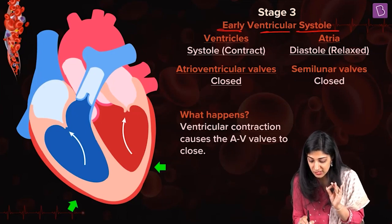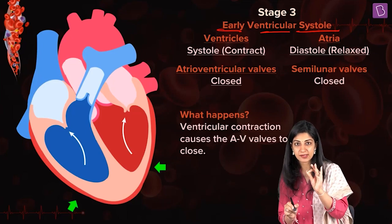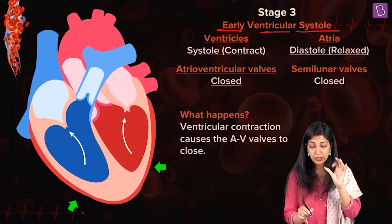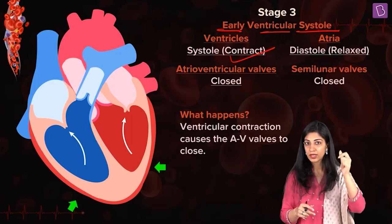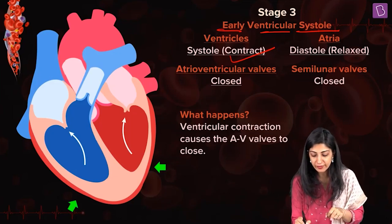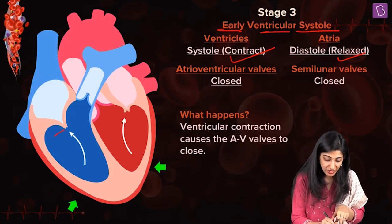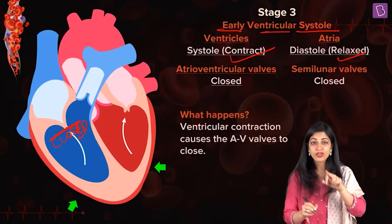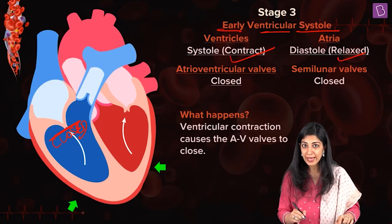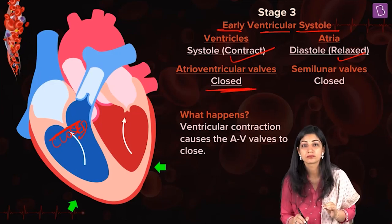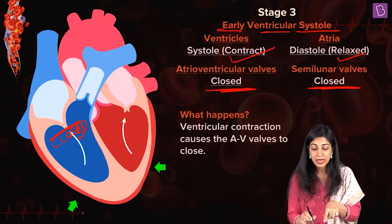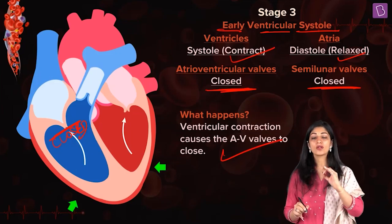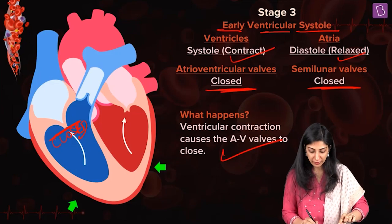Stage three — early ventricular systole (early VS). Now the ventricles are going to contract, and the atria are relaxed. Because I don't want blood to flow back into the atria, the AV valves must close. In early ventricular systole, the semilunar valves are still closed, and the AV valves close — this is very important.